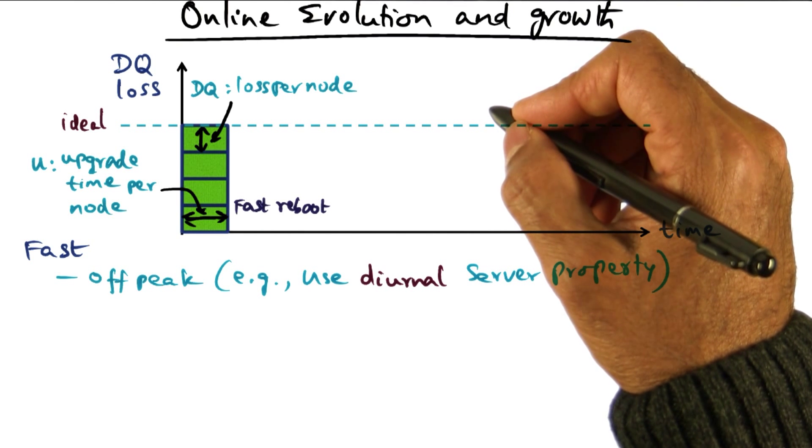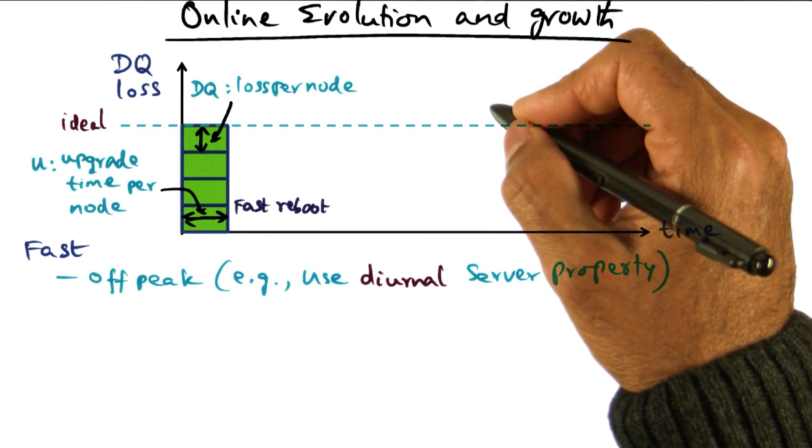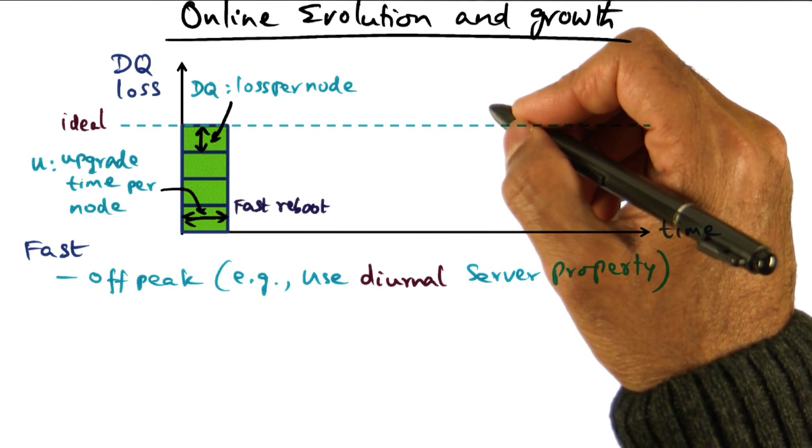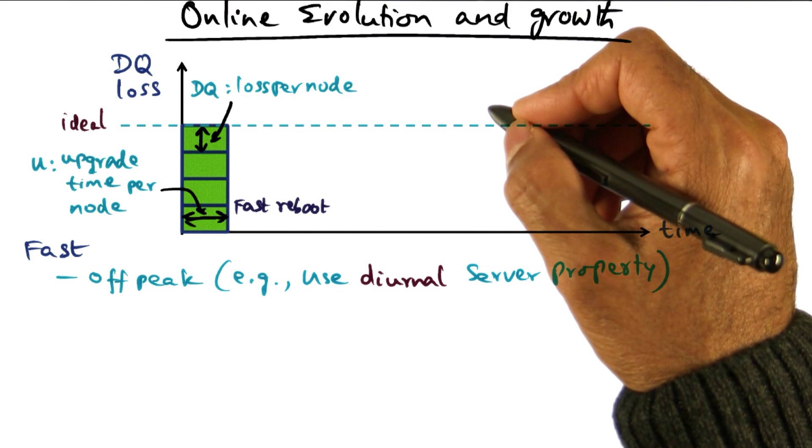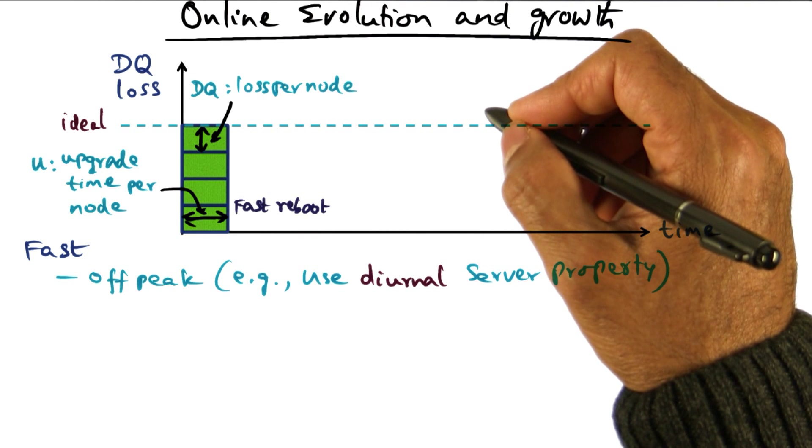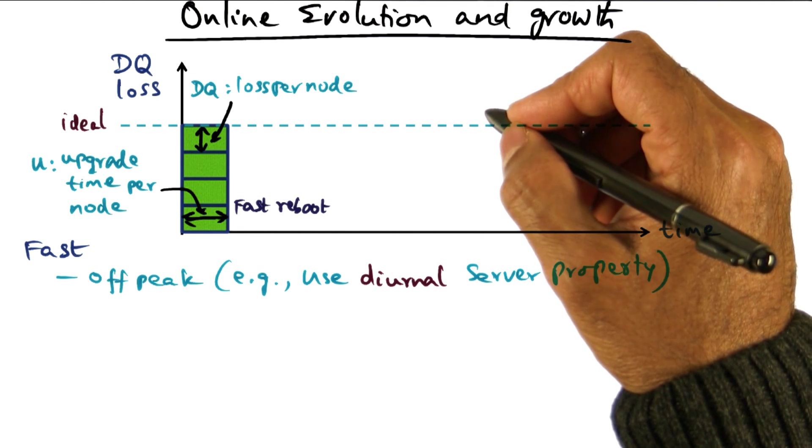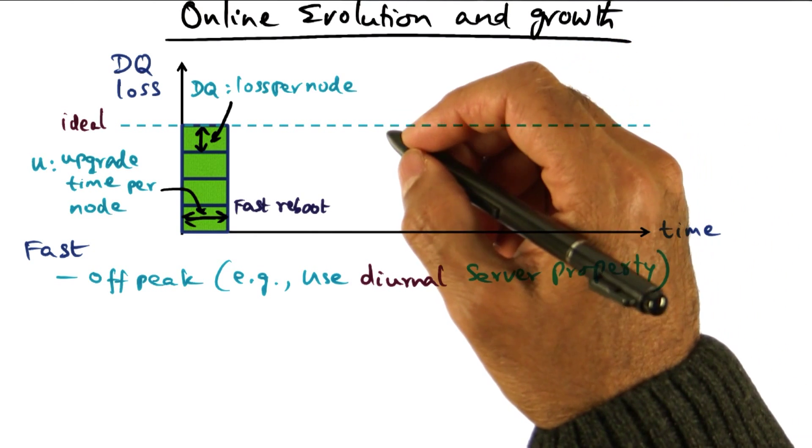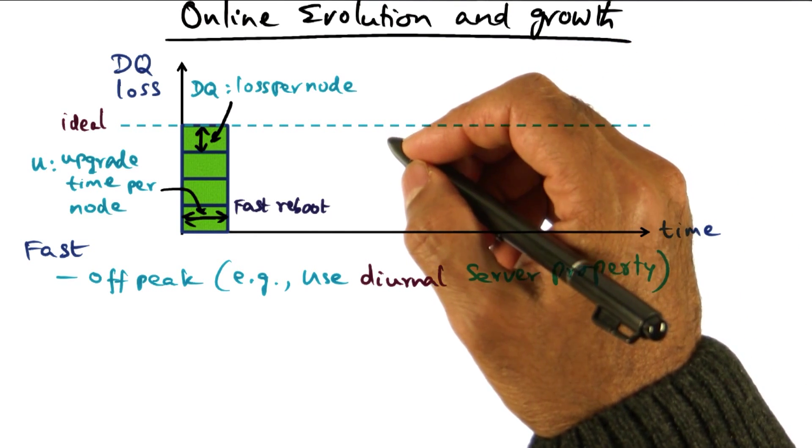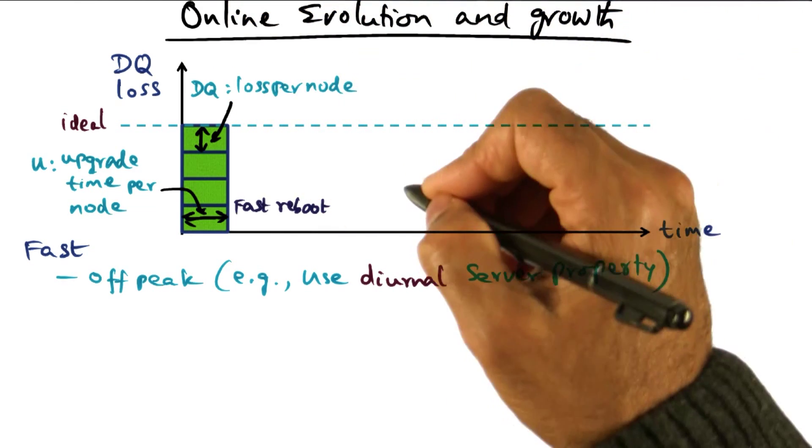Or maybe new nodes are being added, or maybe all the old nodes are being retired and brand new nodes are being brought in to serve the user community. Whether it is hardware or software upgrade that needs to be done, that has to be done with the understanding that while that upgrade is happening, there's going to be loss of service. Again, the DQ principle comes in handy in measuring what exactly is the loss that we are observing of the service when we do this kind of online evolution and growth.